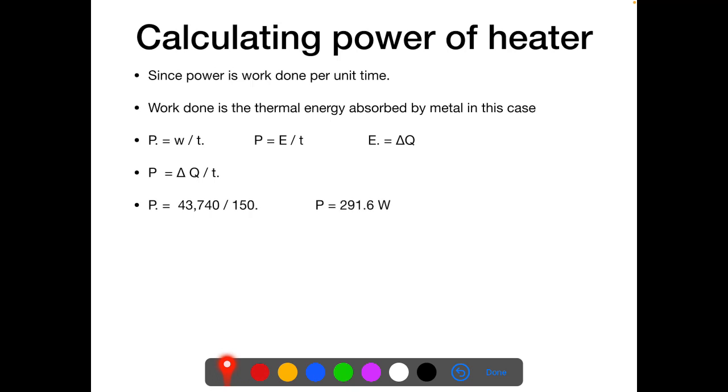So E is ΔQ. This is the amount of heat provided by the heater, or you can say this is the amount of heat absorbed by the metal. Remember, ideally we are considering no energy lost to the surroundings. In practical situations, we have to consider that some of the energy will be lost to the surroundings also, but we are ignoring that fact over here.